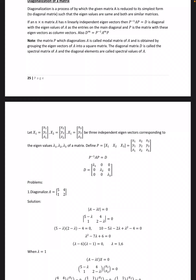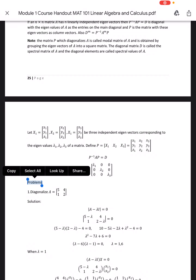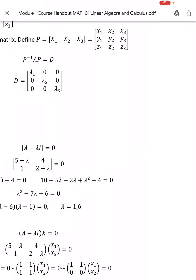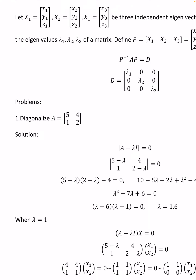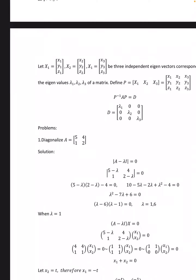Let X1 = (x1, y1, z1), X2 = (x2, y2, z2), X3 = (x3, y3, z3) be three linearly independent eigenvectors corresponding to the eigenvalues lambda1, lambda2, lambda3 of a matrix. We define P as the matrix with columns X1, X2, X3, i.e., P = [[x1, x2, x3], [y1, y2, y3], [z1, z2, z3]]. So we have P inverse AP = D, where D = diag(lambda1, lambda2, lambda3).